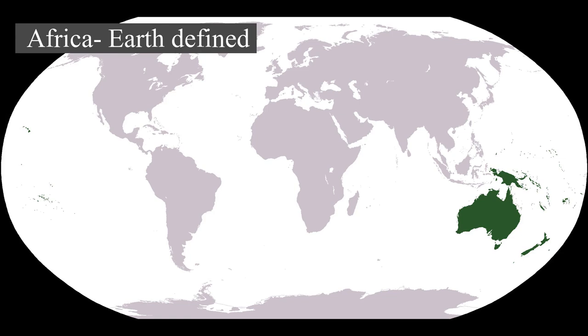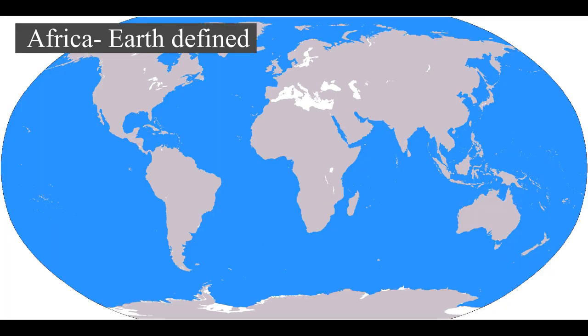The history of Africa is long, complex, and has often been underappreciated by the global historical community. Africa, particularly eastern Africa, is widely accepted as the place of origin of humans and the hominid clade great apes. The earliest hominids and their ancestors have been dated to around seven million years ago, including Sahelanthropus tchadensis, Australopithecus africanus, A. afarensis, Homo erectus, H. habilis.